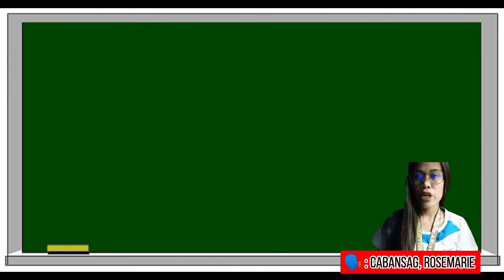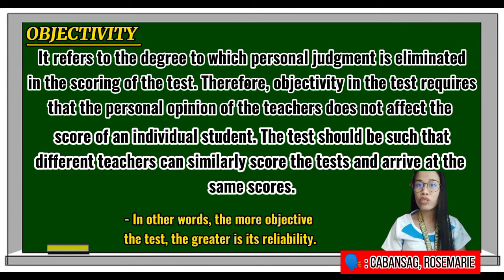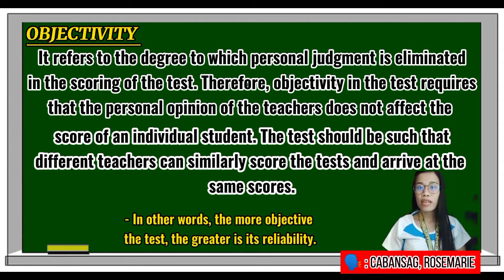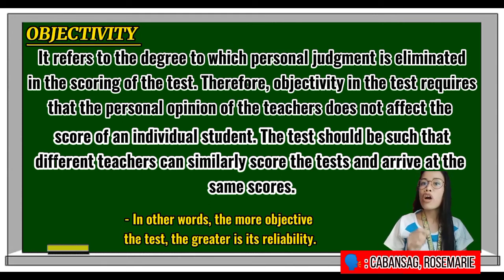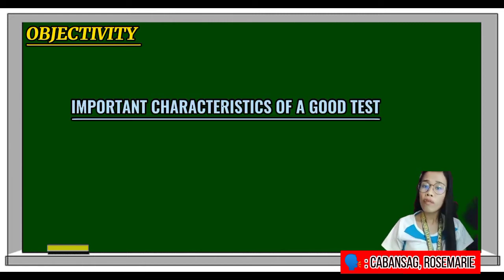We now proceed to objectivity. Objectivity refers to the degree to which personal judgment is eliminated in the scoring of the test. Objective testing requires that the personal opinion of the teacher does not affect the scores of an individual student. Different teachers should be able to score the test and arrive at the same score. The more objective the test, the greater its reliability. Objectivity is important because it affects both validity and reliability of test scores.